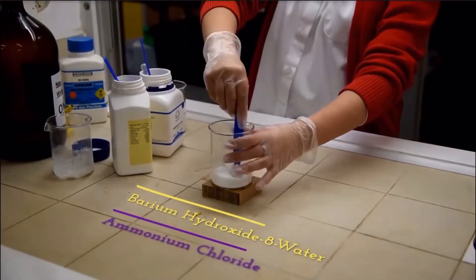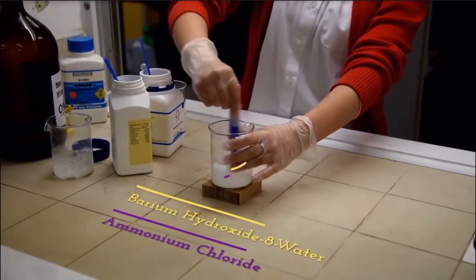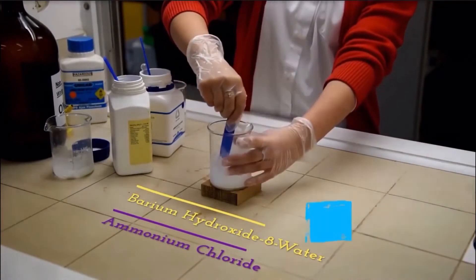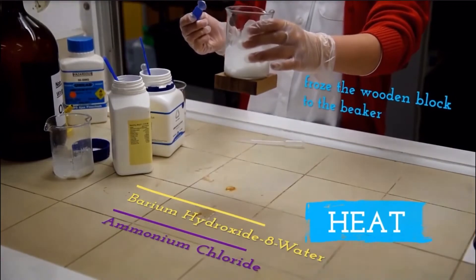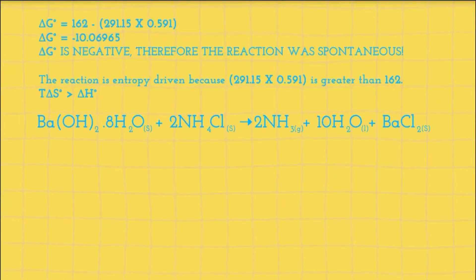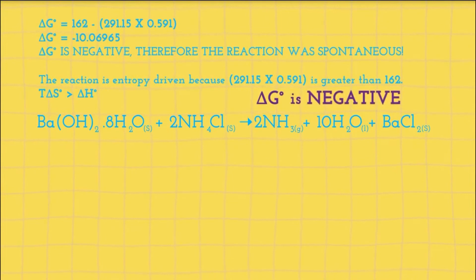Here you can see barium hydroxide and ammonium chloride being mixed without external energy. The reaction is endothermic as energy was sucked from the surroundings and therefore froze the wooden block to the beaker. Using Gibbs free energy calculation, we can see that delta G is negative, showing the reaction to be spontaneous.